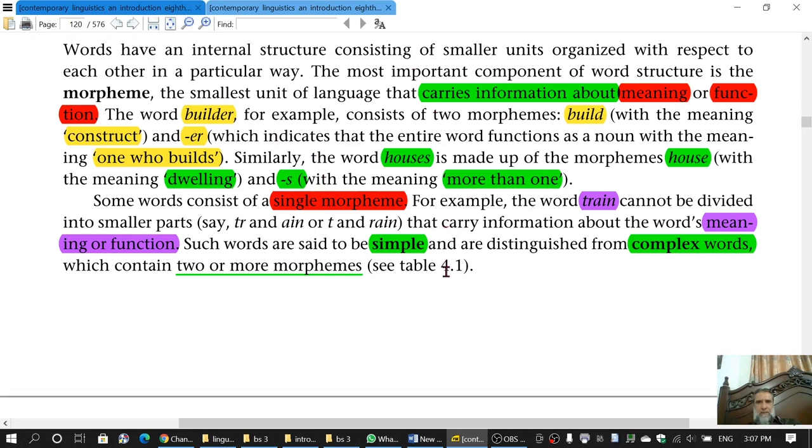But the important thing here is the difference between simple and complex words. I think you have not done this one, so we will concentrate on this area. We often have words which consist of single morpheme. For example, if we take train, it is a single morpheme. It is a word as well as a morpheme.